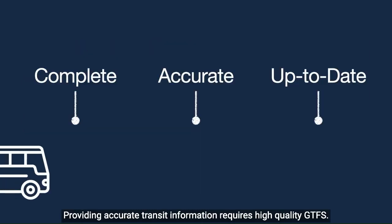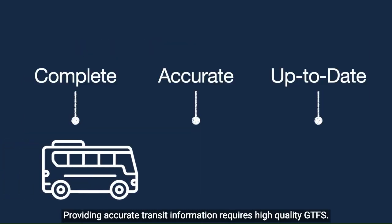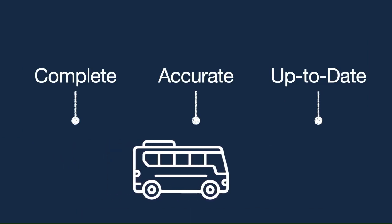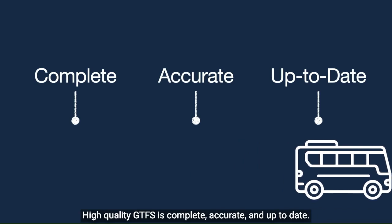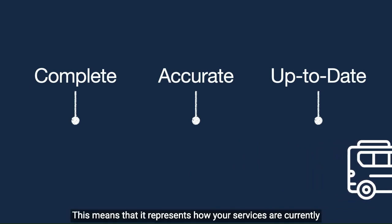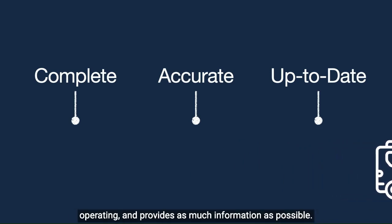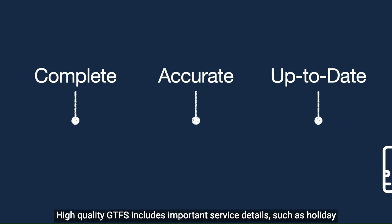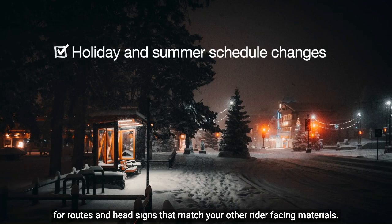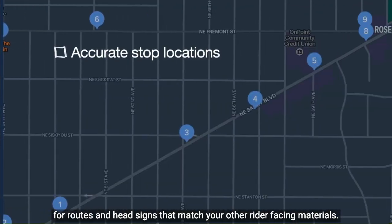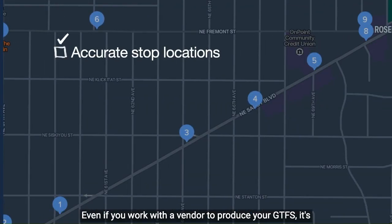Providing accurate transit information requires high-quality GTFS. High-quality GTFS is complete, accurate, and up-to-date. This means that it represents how your services are currently operating and provides as much information as possible. High-quality GTFS includes important service details such as holiday and summer schedule changes, accurate stop locations, and names for routes and head signs that match your other rider-facing materials.